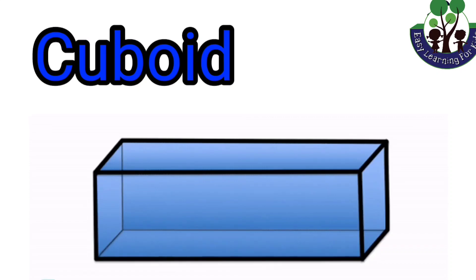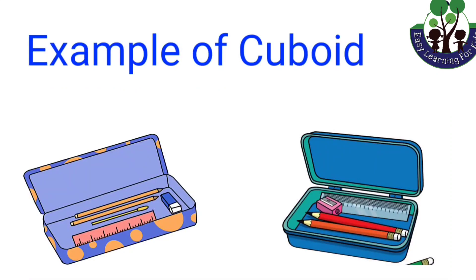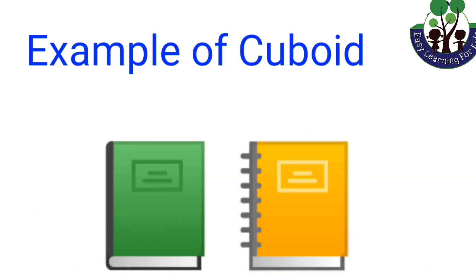Cuboid. A cuboid is another three-dimensional shape that is formed using rectangles. For example, pencil box and books.